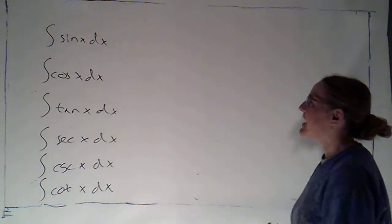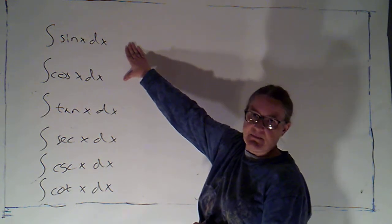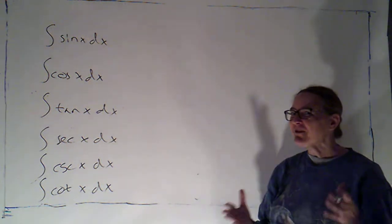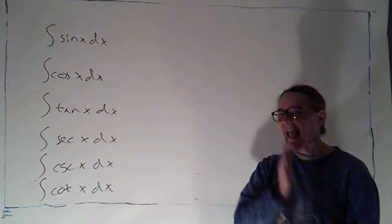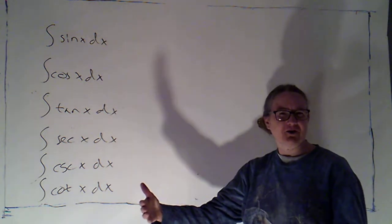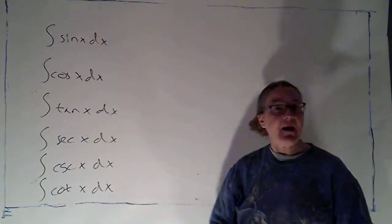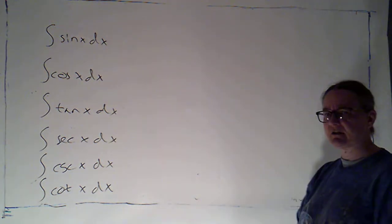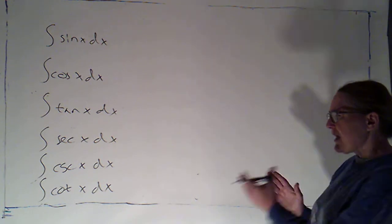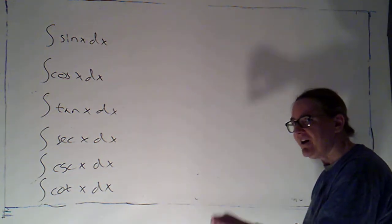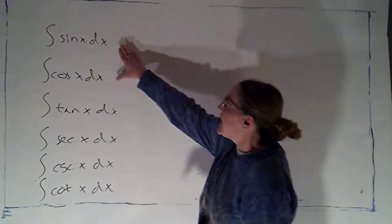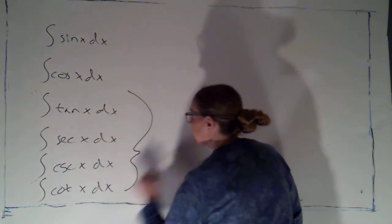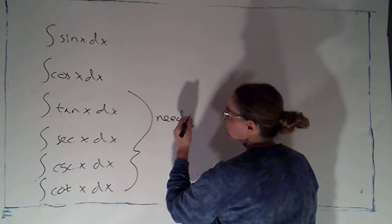Welcome back. These are the only two that we can easily do by inspection. While I know how to take the derivative of tangent of x, I haven't really seen tangent showing up as the derivative of some other function. Same thing with secant, cosecant, and cotangent — I know how to take the derivative, but we haven't really seen a function where those appear as derivatives. With sine and cosine, those are the two I should be able to do. For the others, we need more tools — some of which we'll get this semester, some not until later.